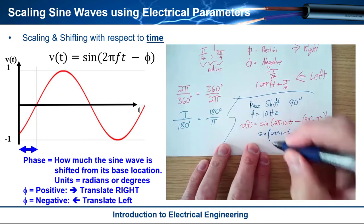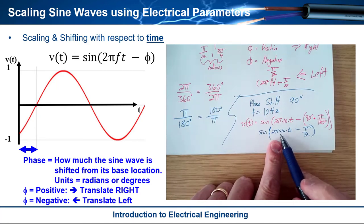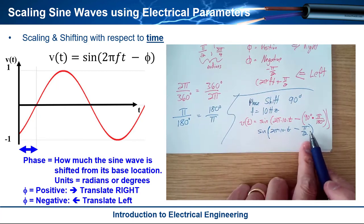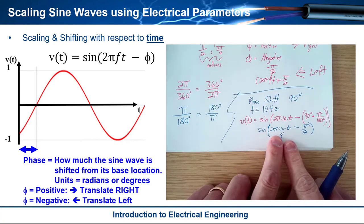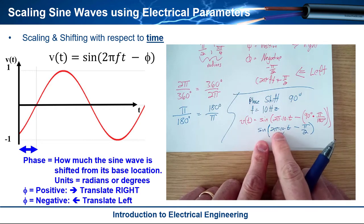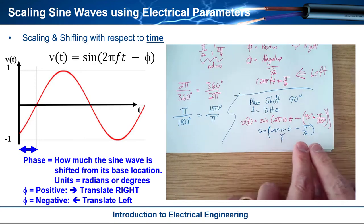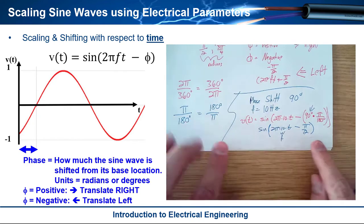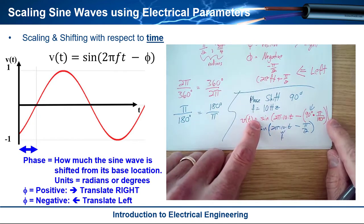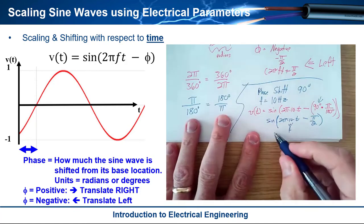Now this is where it gets interesting. You look at something like that and it seems foreign because you have 2πf here and then π over 2 in there. But remember: 2πft is the scaling factor so that the sine wave repeats every one period, and the π/2 came from converting 90 degrees into radians. The sine function's argument must always be in radians.